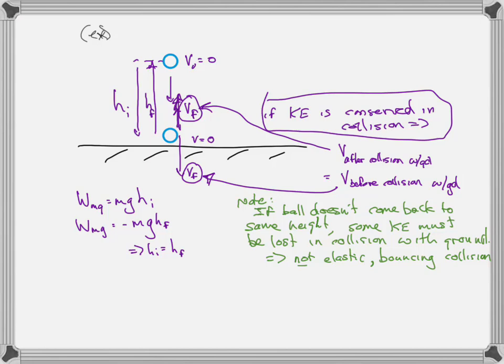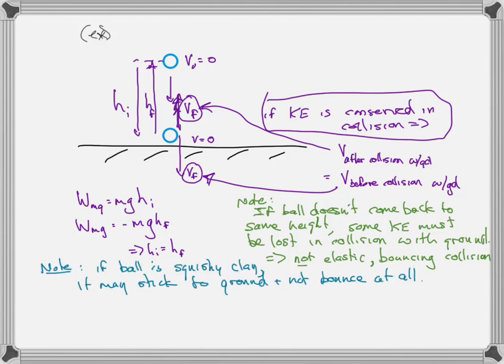Let's talk about one other kind: a piece of clay. What happens when you drop a piece of clay on the ground? Depending on the clay, you might imagine it simply sticks to the ground — it doesn't bounce at all. You drop it, plop, it just sticks. That is a perfectly inelastic collision — it is a sticking collision. All the kinetic energy is lost in that collision; energy still goes somewhere, but it's lost as heat to the ground and the ball.